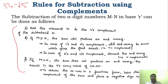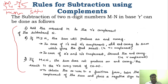In a subtraction like this, 54 is called the minuend — M-I-N-U-E-N-D — and 65 is called the subtrahend. So M is nothing but the minuend, and N is nothing but the subtrahend. This is a normal subtraction.